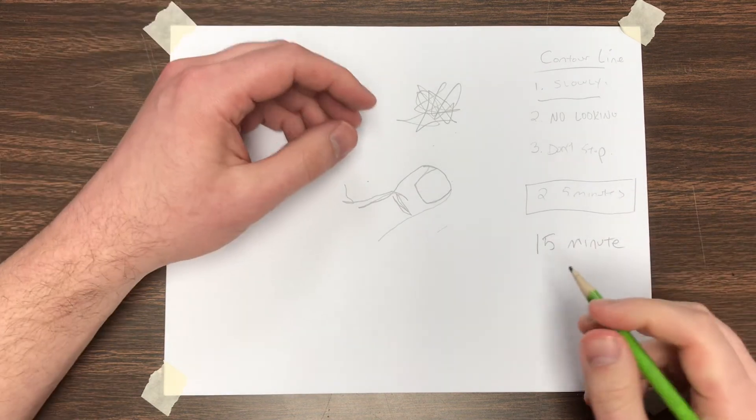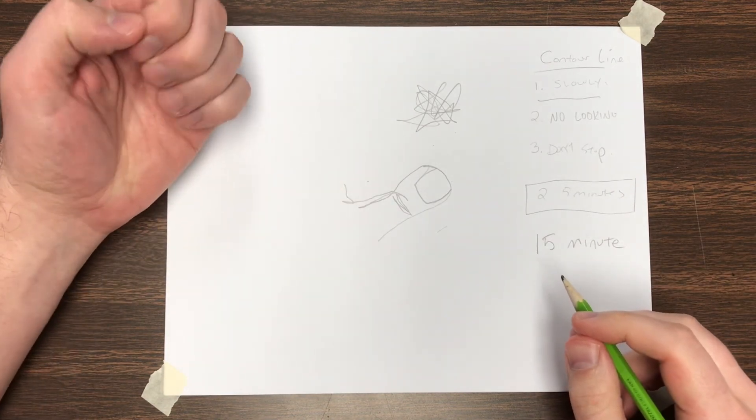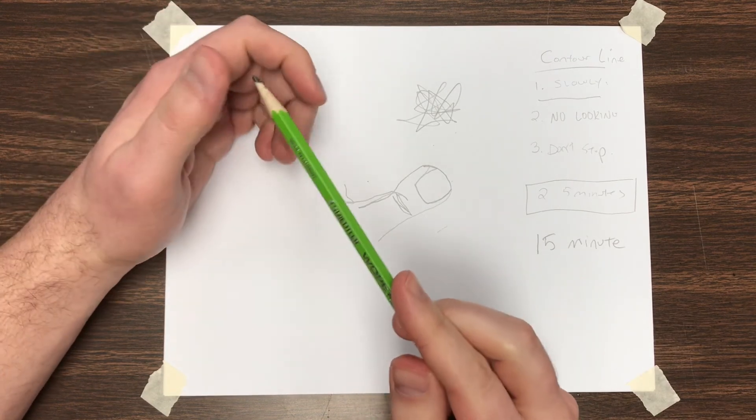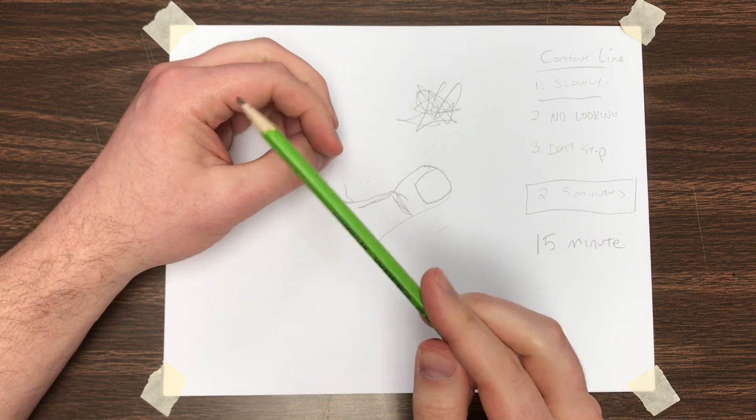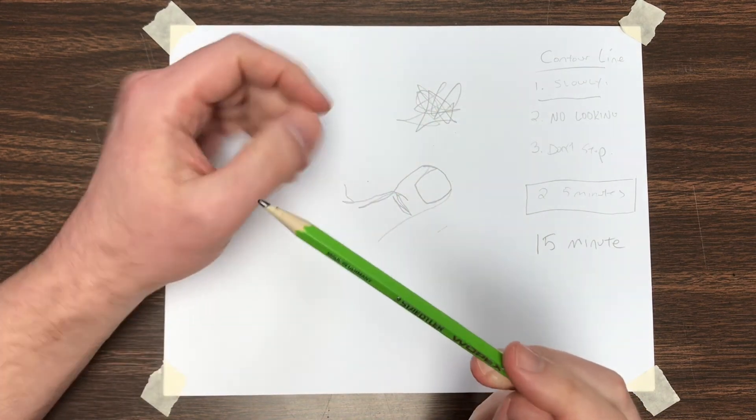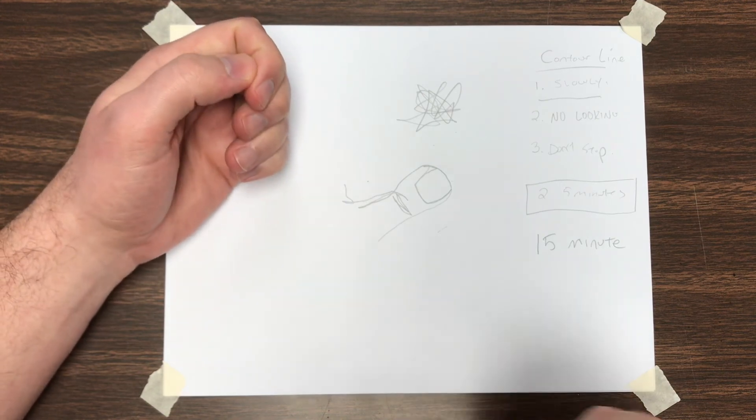So when you draw your hand for 15 minutes, I want you to make sure you're folding, so you get lots of wrinkles, and you can see most of your fingers. Anything really flat like this is not really going to work well. So it needs to be a folded up, relaxed hand.